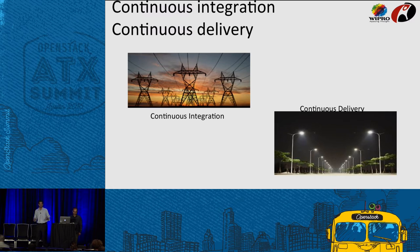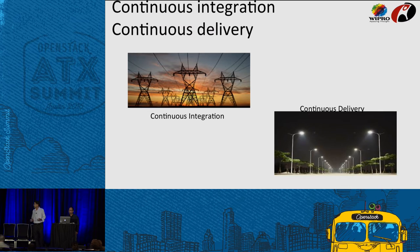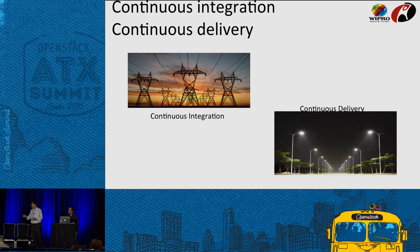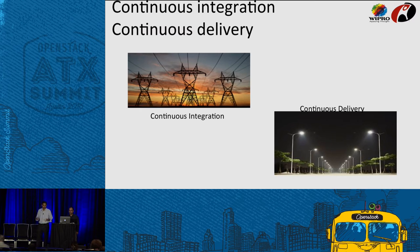The ultimate goal is to have continuous delivery where we should be able to deliver anything into production on demand. As part of that, we are trying to focus on two critical things: continuous integration and continuous delivery. There's a small analogy here — like in the energy sector, we generate power and then deliver it for usage.